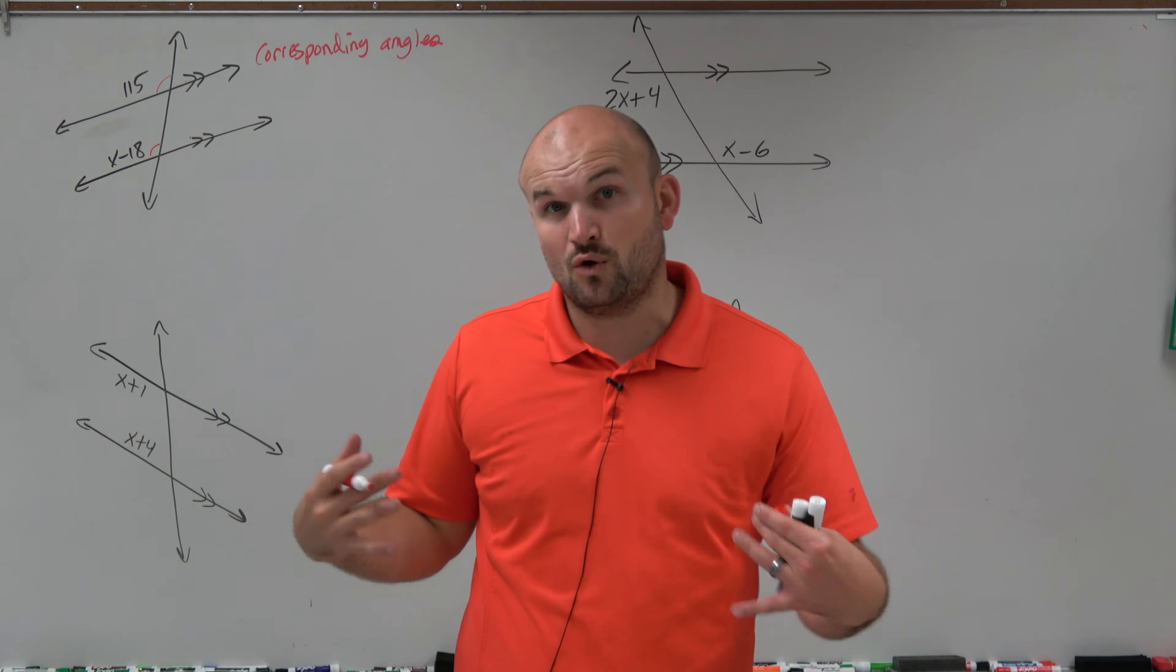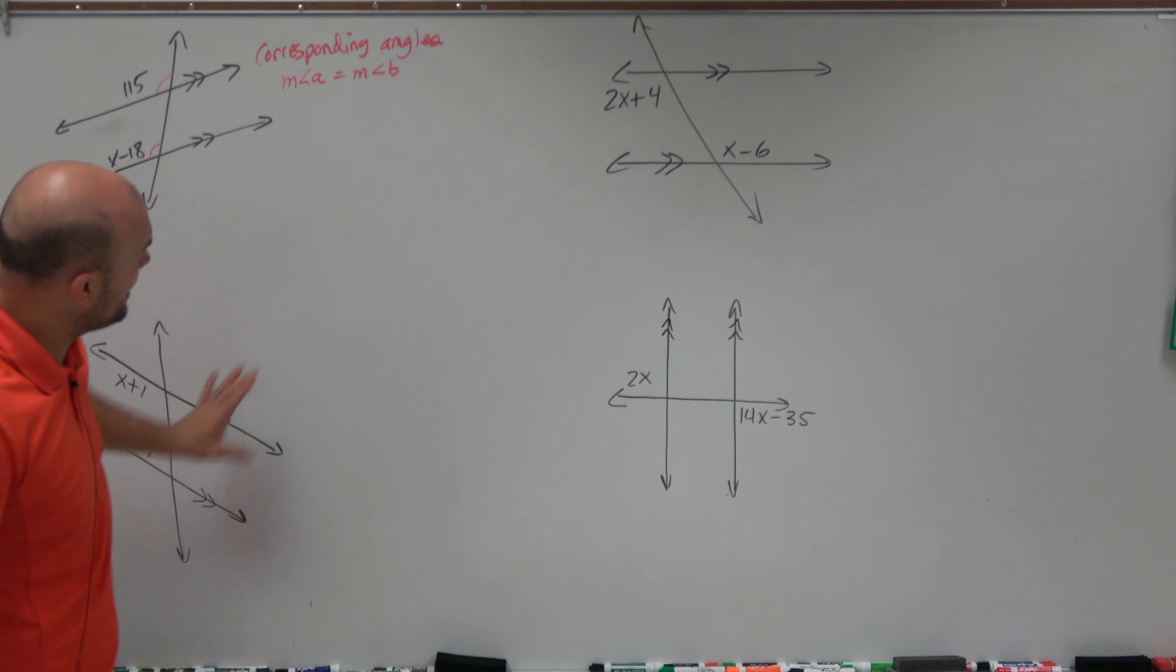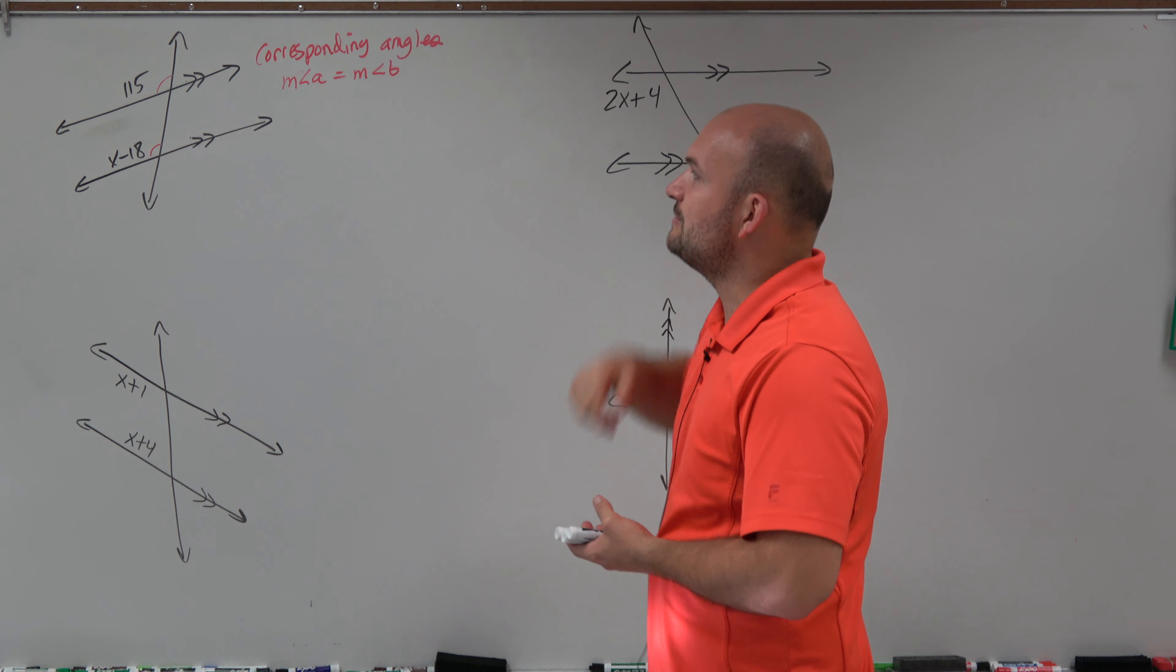Now, it's important for corresponding angles for us to remember that corresponding angles are exactly the same. So if I had the measure of angle A is equal to the measure of angle B, that is for two corresponding angles. However, that is only true if you look at the theorems and postulates, that's only true when you have parallel lines in a transversal. So it has to have parallel lines.